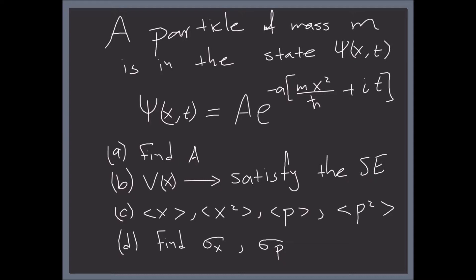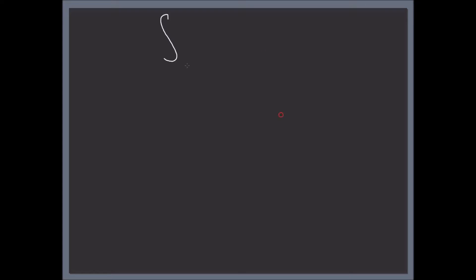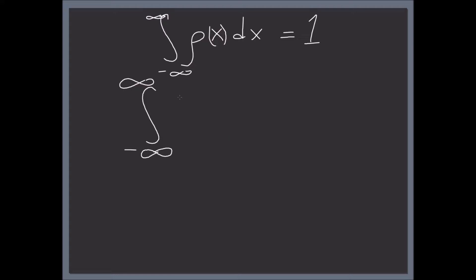Let's find the normalization constant A. We know that if we integrate the probability density over all space, we should get one. This is one of the fundamental laws — the particle must exist somewhere in the universe. The normalization condition is the integral from negative infinity to infinity of psi times psi-star dx, where psi-star is the complex conjugate of psi, which means you flip the sign of every imaginary part.